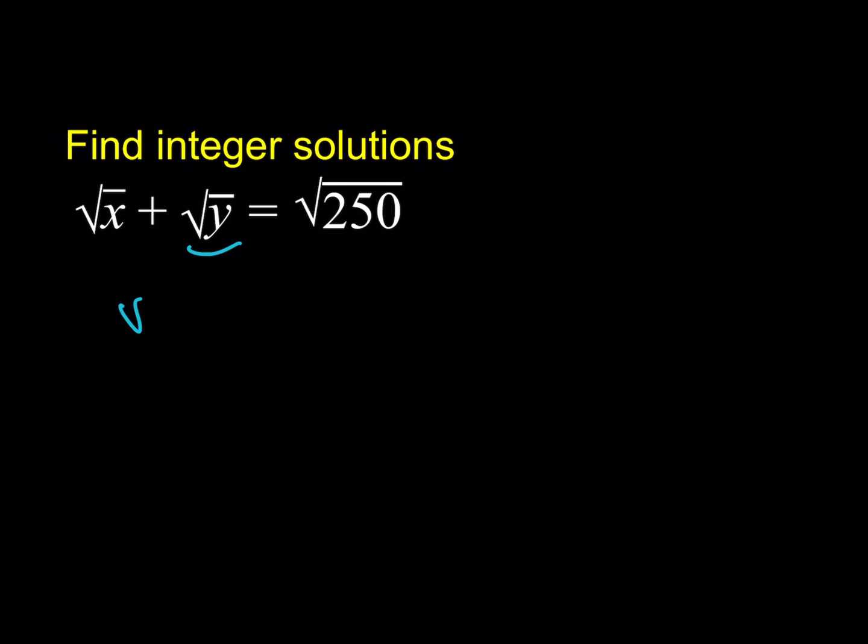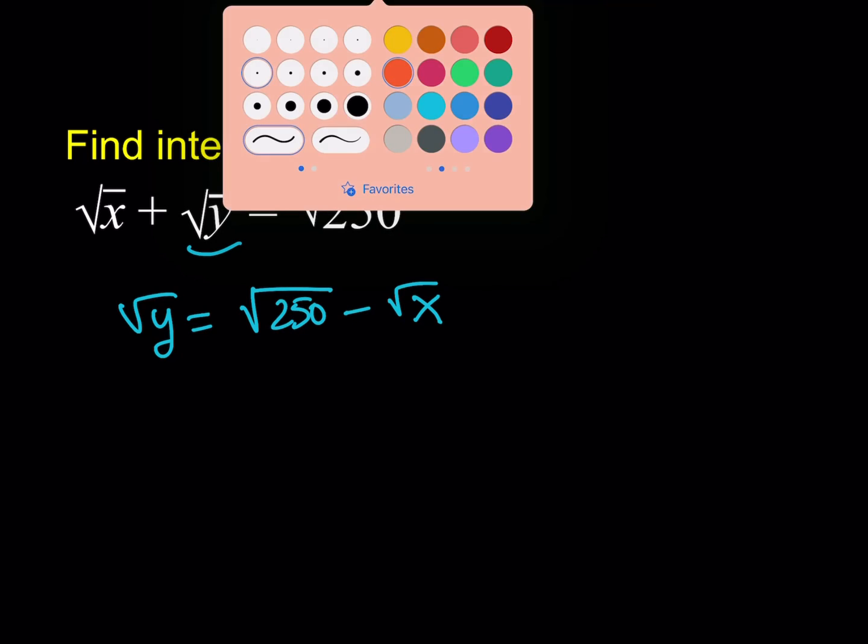I'm going to isolate the square root of y here. So that's going to give me the square root of 250 minus the square root of x. And then obviously this is a very obvious step for most people. I'm going to square both sides.